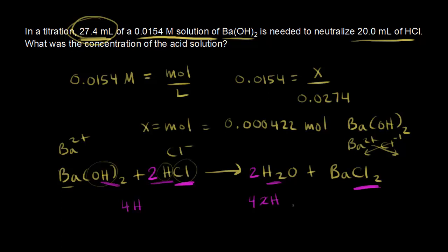Let's look at the mole ratio for barium hydroxide to HCl. For every one mole of barium hydroxide, we have two moles of HCl. So we already calculated how many moles of barium hydroxide that we used in our titration. That's 0.000422. So therefore, we had twice as many of HCl. So we could multiply this number by two, and we'd figure out how many moles of HCl we have.